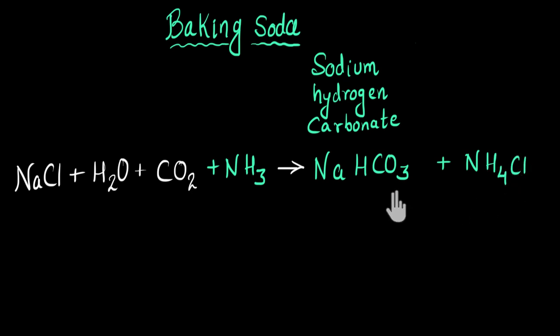So to make baking soda, I need four ingredients: sodium chloride, water, carbon dioxide and ammonia. Don't forget this one. I usually forget this one. So we need four reactants and then I'll get baking soda or sodium hydrogen carbonate. And along with this, one more product is getting formed, ammonium chloride.